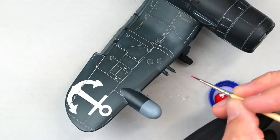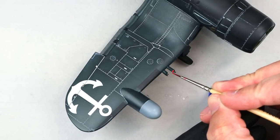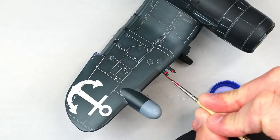After installing the cannons and rocket stubs, I painted the forward sections of those cannons with Vallejo flat red.